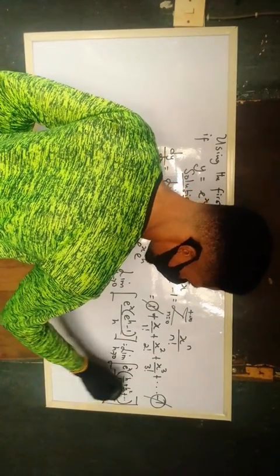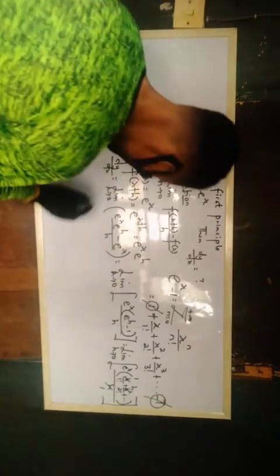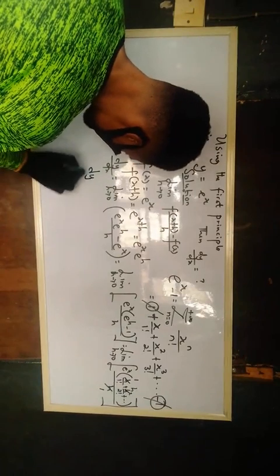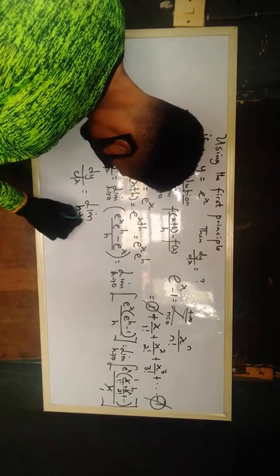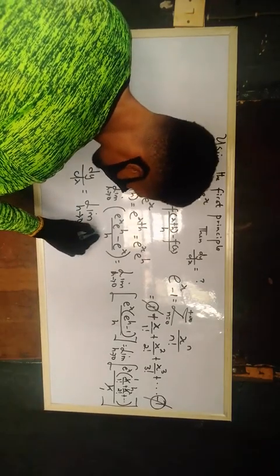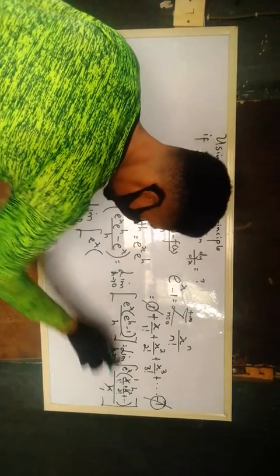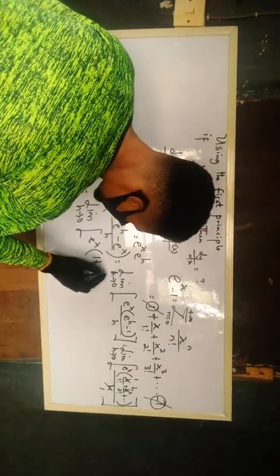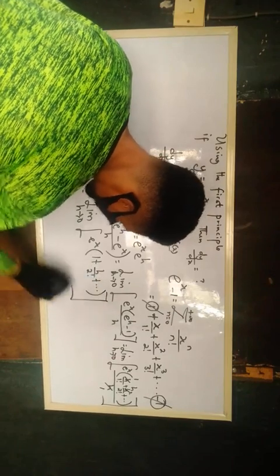So h, 1 to here, 1, reduces this to h. So I have dy/dx equals to limit as h is approaching 0, e raised to power x times the quantity h over 1 factorial, plus h squared over 2 factorial, plus and so on, close bracket.